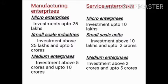In Manufacturing Enterprises, there are three sub-sectors: Micro Enterprises, Small Scale, and Medium Enterprises. Similarly, Service Enterprises also have Micro, Small Scale, and Medium categories. For Manufacturing Enterprises, Micro Enterprises are defined as those with investment up to 25 lakhs in plant and machinery. Small Scale industries fall in the range of 25 lakhs to 5 crores.